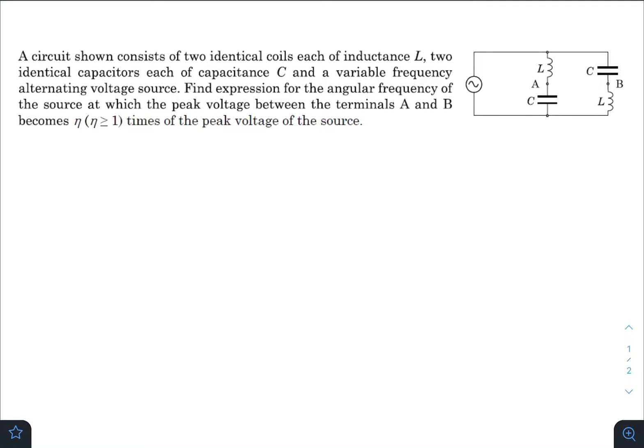Hey, what is up everyone, I hope all of you are doing great. In today's question, we have a circuit shown that consists of two identical coils each of inductance L, two identical capacitors each of capacitance C, and connected with an alternating voltage source. We need to find out the expression for angular frequency of the source at which the peak voltage between the terminals A and B becomes η times the peak voltage of the source.